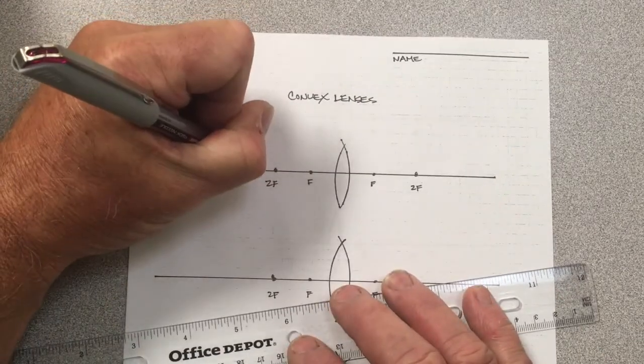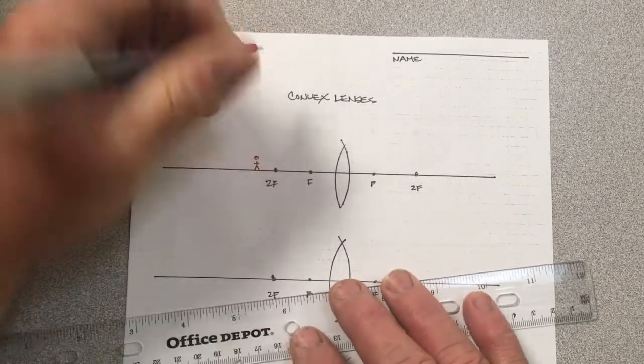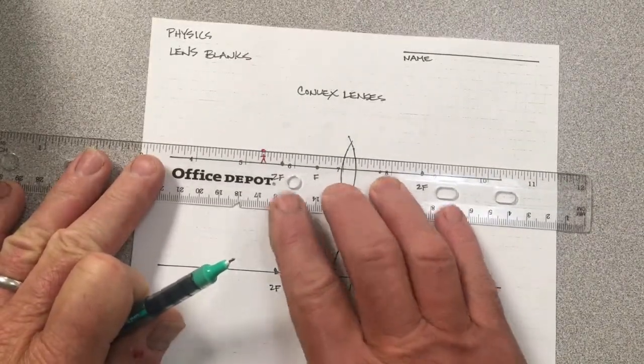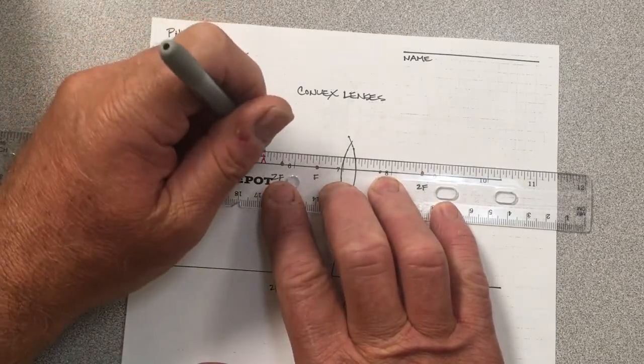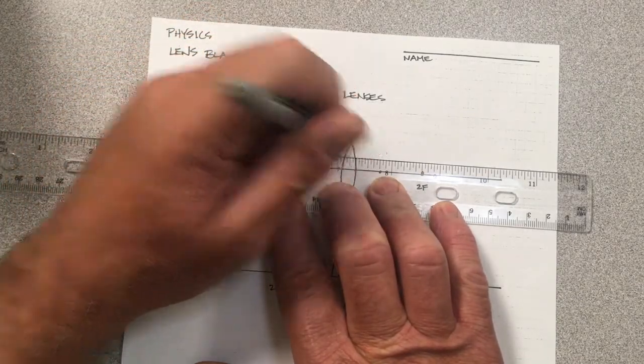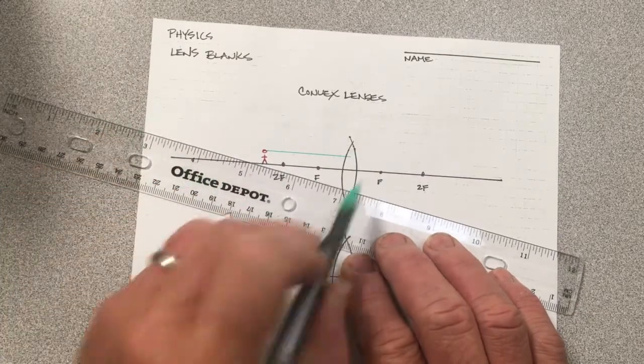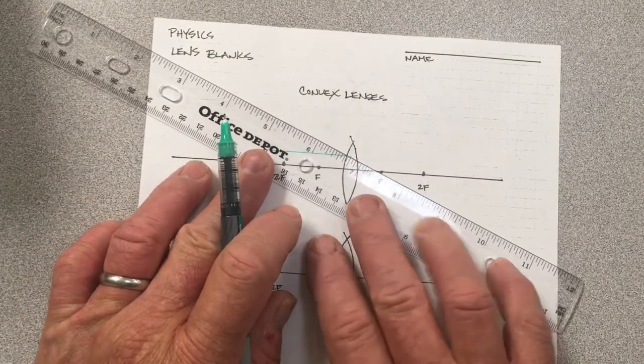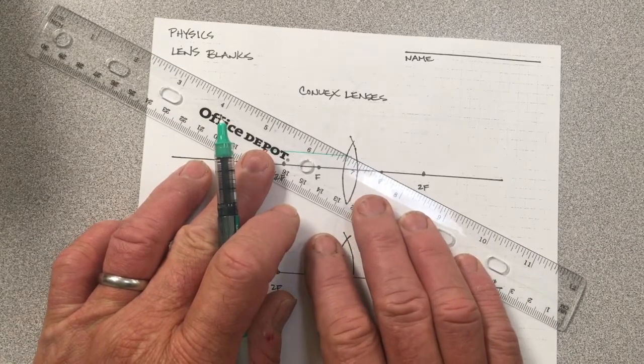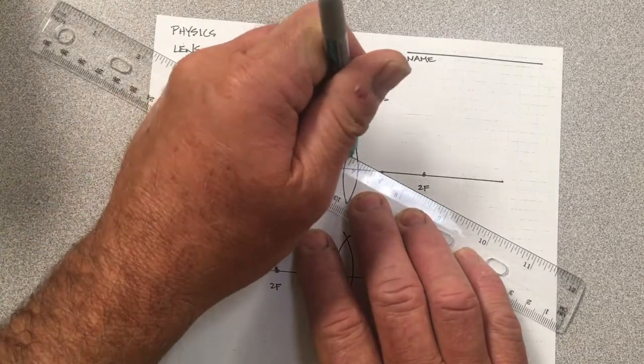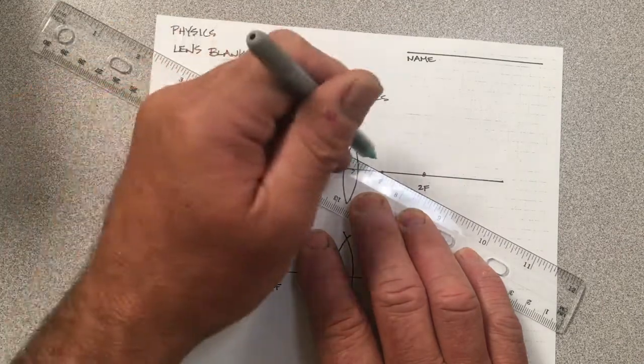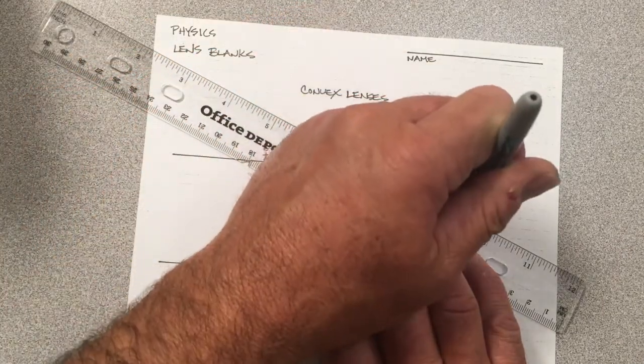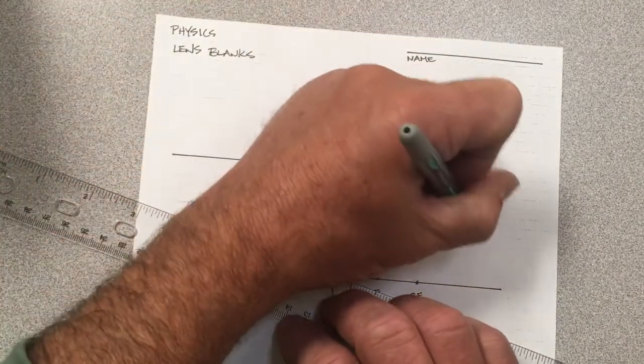So typically I like to go out here way beyond 2F and let's do our ray diagram. Now, this is a glass lens. It's not a mirror. So light typically travels right through it. So I pretend as if all the bending occurs in the middle of the lens, which is certainly not true, but it's the way all books do it and it's good enough. So that light that goes parallel to the lens on the way to the lens, parallel to the principal axis, it's going to go through the focal point on the opposite side of the lens.